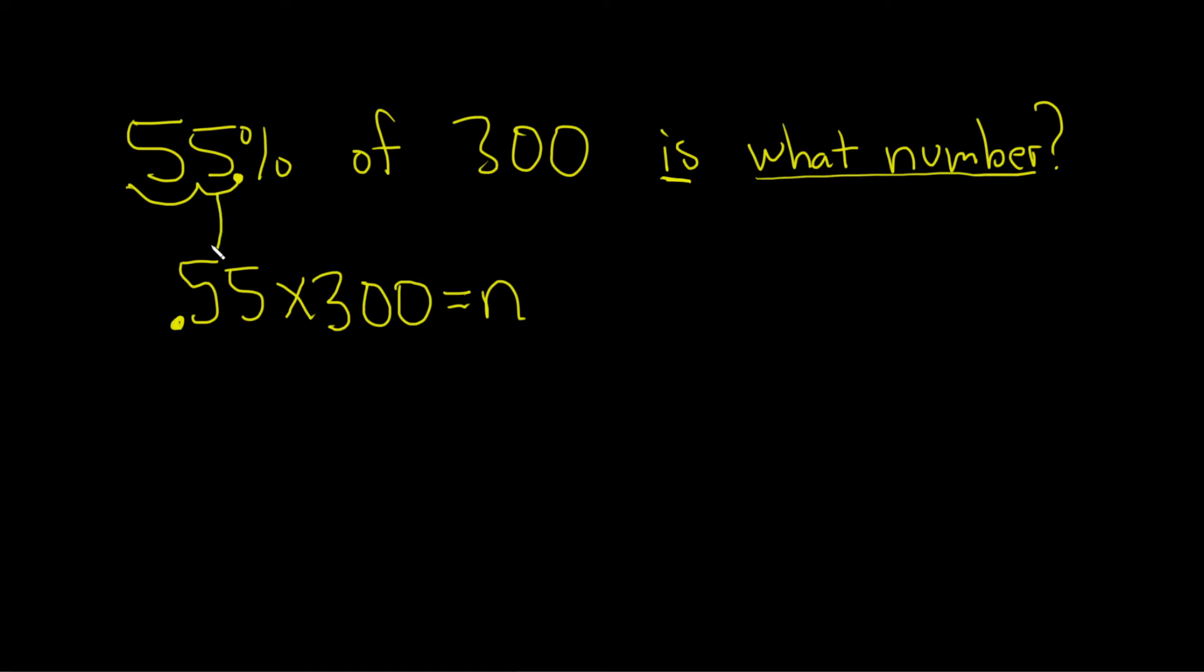So again, the 55% turns into a decimal. Of means times. The 300 is 300. Is means equals. What number? We decided to call it little n.